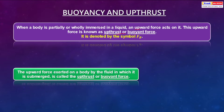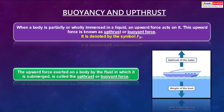The upward force exerted on a body by the fluid in which it is submerged is called the upthrust or buoyant force. For example, the weight of a boat is the force it applies on the water, and the buoyant force acts upward on the ship.